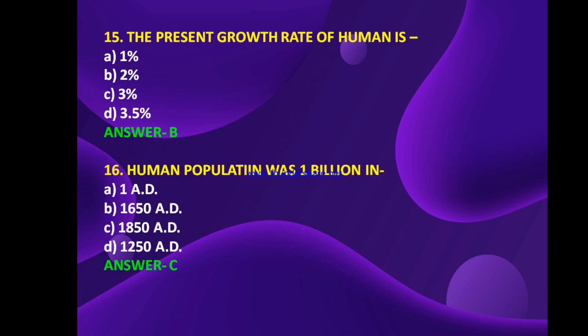The present growth rate of humans is 1%, 2%, 3%, or 3.5%? The answer is 2%. Human population was 1 billion in 1 AD, 1650 AD, 1850 AD, or 1250 AD? The answer is C — 1850 AD.